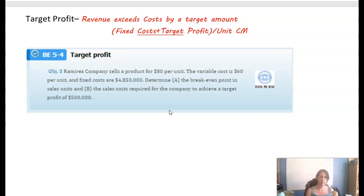So it's asking, what is the breakeven point in units? Ramirez sells a product for $80 per unit, variable cost is $60, fixed cost of $480,000. So first they want us to figure out the normal breakeven. Before the target profit, this is A. $4,850,000 divided by selling price is $80 and variable cost is $60. So that comes out to be 242.5 units. Really 243, you can't sell 242.5, but we'll go with it.